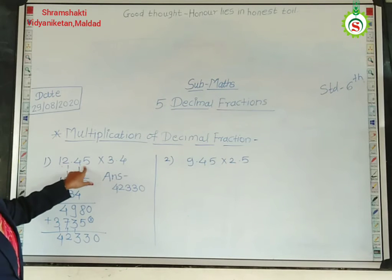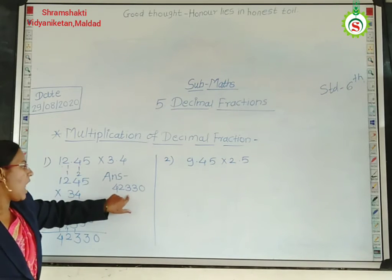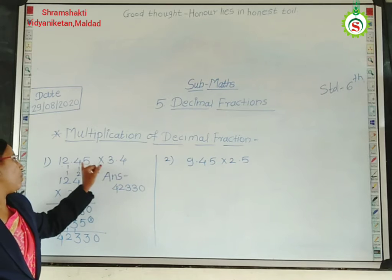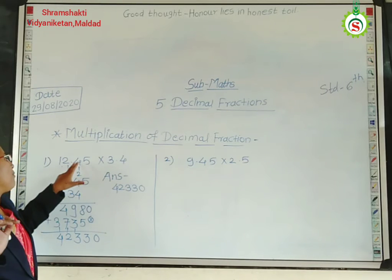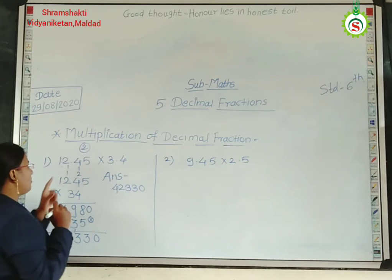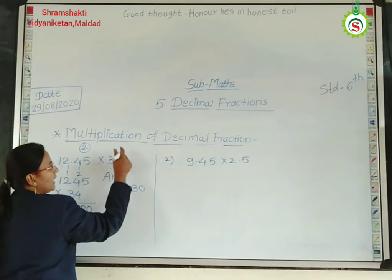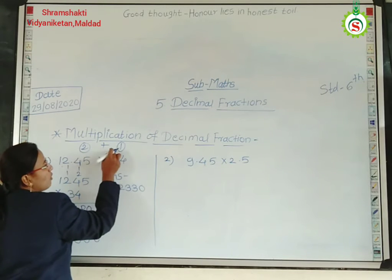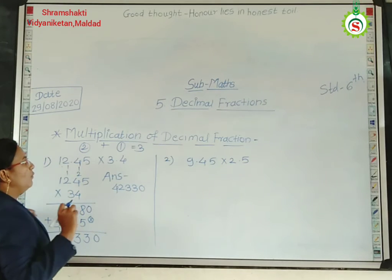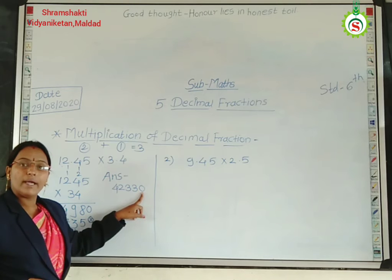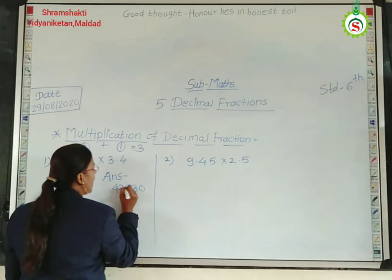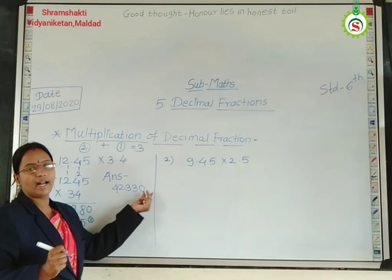Now, students, we have to place the point in our answer. What do we do here? We have to add the digits after the point from both sides. Here, after the point, how many digits? 2 digits. And here, after the point, how many digits? Only 1 digit. So 1 plus 2 equals 3 — we have to leave 3 places. So our answer is 41.580.